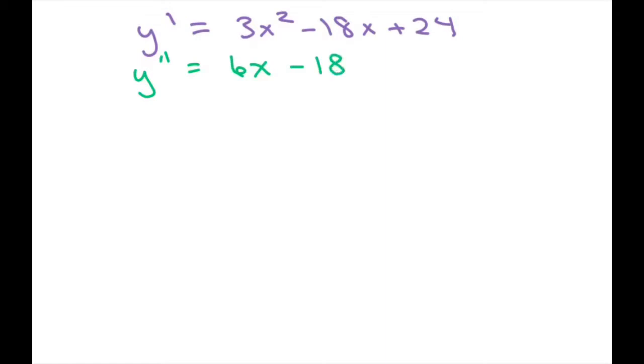Now we're going to set this to 0. So you get 6x equals 18. This equals 0 at x equals 3.